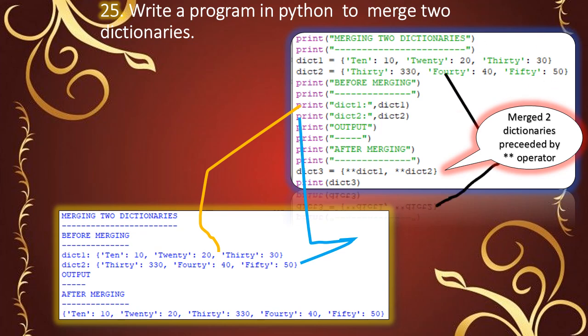Now you can see the output. The merged dictionary is assigned to a variable, and you can see that the two dictionaries are combined. Thank you.